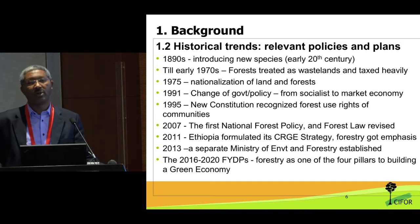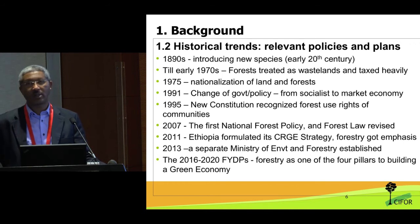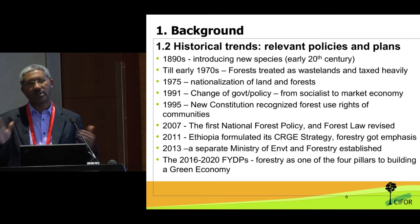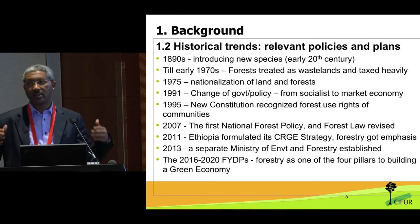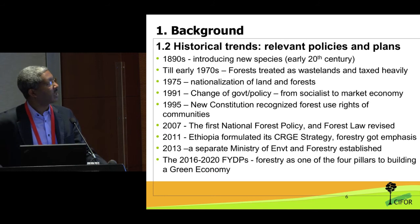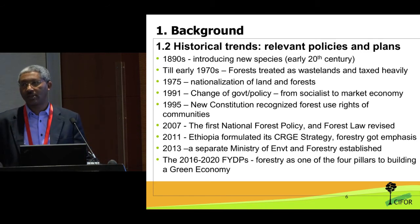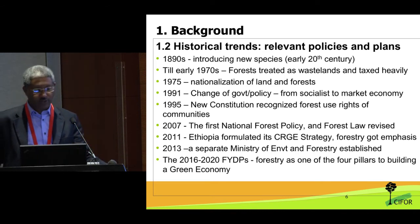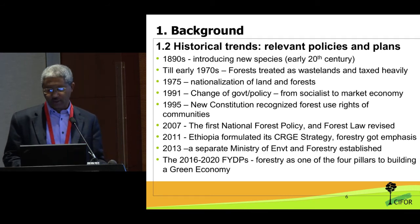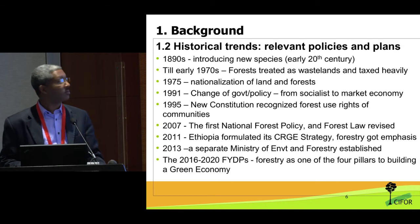Since 2007, Ethiopia has had a new law and its first forest policy, where the rights of communities to manage forests is recognized, though the details were not fully developed. In 2011, the country made a radical shift to commit to becoming a carbon-neutral country by 2030, and forestry was identified as one of the pillars. Since then, policy makers have been paying attention to landscape rehabilitation at scale. In 2013, a separate ministry was established to facilitate these initiatives, and the current five-year development plan includes major goals to increase forest cover and the contribution of forests to the national economy.